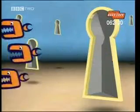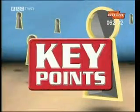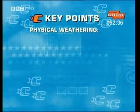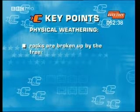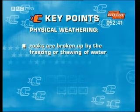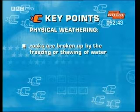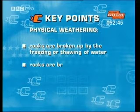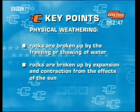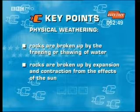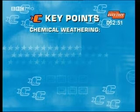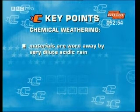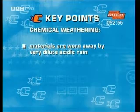Here are the key points you need to know about physical and chemical weathering. Physical weathering is the process where rocks on the surface are broken up, either by alternate freezing and thawing of water in the cracks of rocks, or by the continual expansion and contraction of rocks from the effects of the sun. Chemical weathering is the process where materials are worn away by naturally occurring acid dissolved in rainwater.